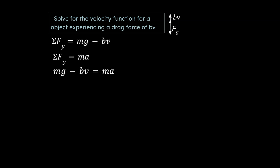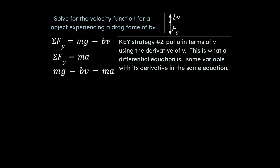How do we reduce two unknowns to one when we have velocity and acceleration? We take the derivative of velocity, which gives us acceleration. So we substitute in dv/dt for a, and that reduces two unknowns to one. This is what a differential equation is — the idea that you have a variable, in this case v, as well as its derivative in the same equation. This is how we keep track of how velocity changes with respect to other factors affecting it.